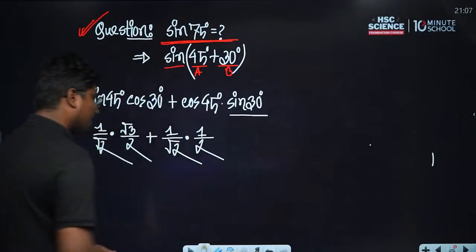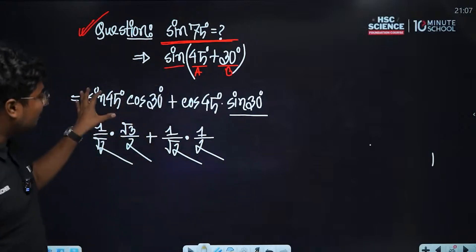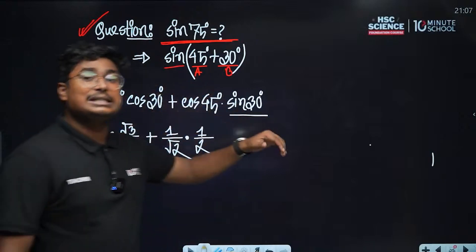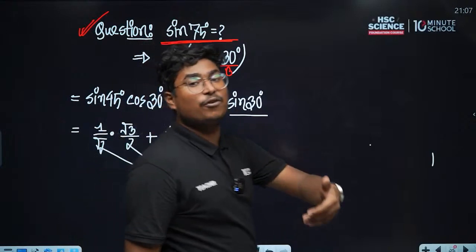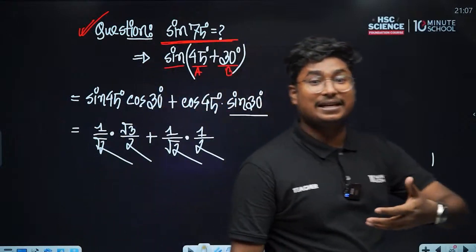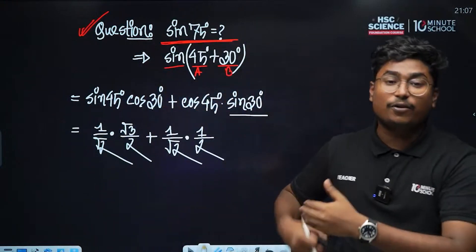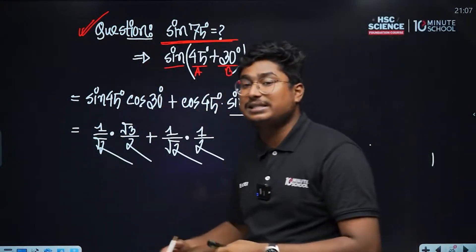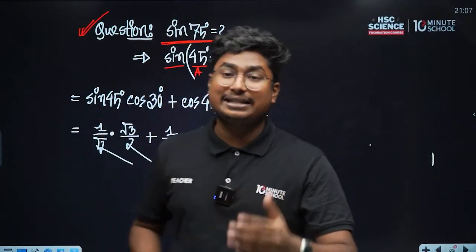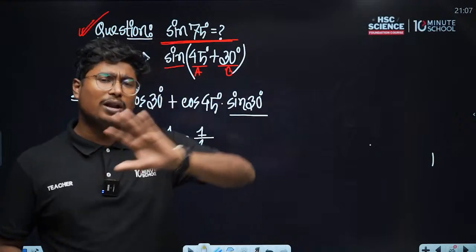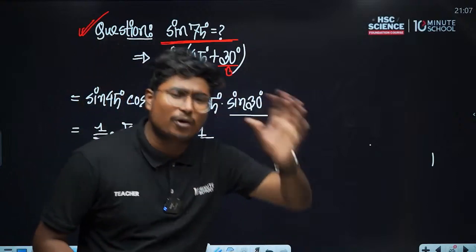We need to solve. Sin 30°, sin 45°, sin 60°, cos 30°, cos 45°, cos 60° — everything is solved. We learned from this calculation: 1 into root 3 is root 3, and 2 root 2 combined gives us (root 3 + 1) divided by 2 root 2.